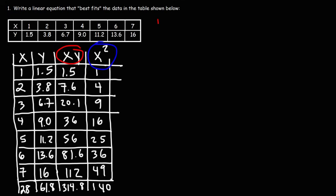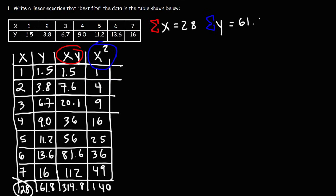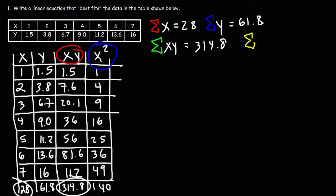Let's write down the important information we've gathered: the sum of x is 28, the sum of y is 61.8, the sum of xy is 314.8, and the sum of x² is 140. These values are important because they help us calculate the slope and the y-intercept of the linear equation.